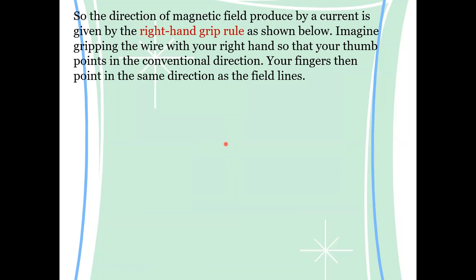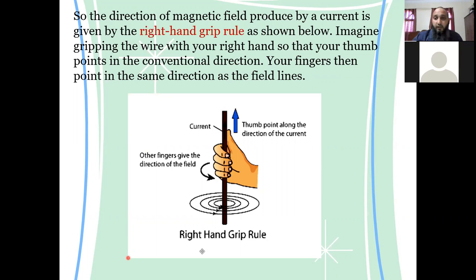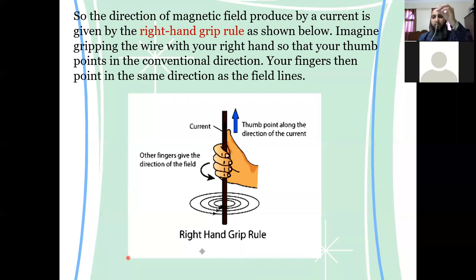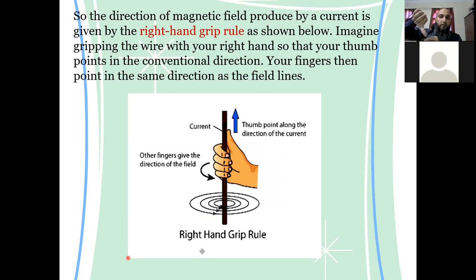To find the direction of a magnetic field, we use the right hand grip rule. Your thumb represents the direction of the current, and your fingers turn around in the direction of the magnetic field. For example, if the current is going up, the thumb points up and fingers wrap around. If the current is going down, the thumb points down and fingers turn around accordingly.